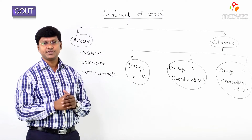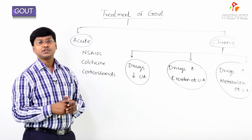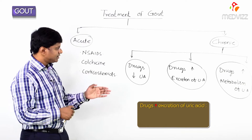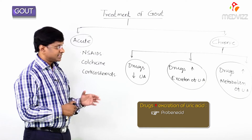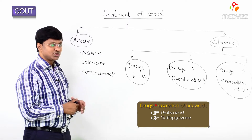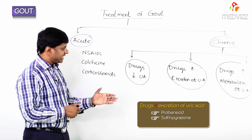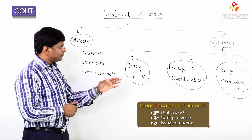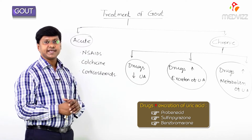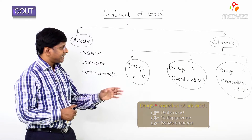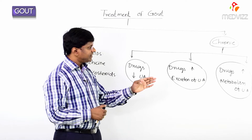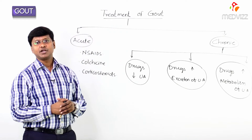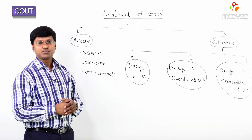The drugs which increase the excretion of uric acid are probenecid, sulfinpyrazone, and benzbromarone.